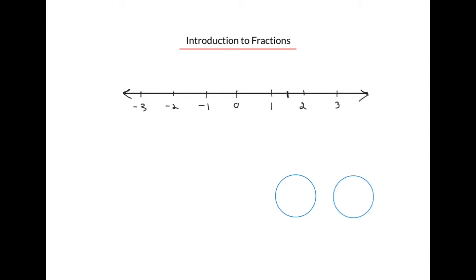We've divided the space between 1 and 2 into two equal parts, so we'll also do that for the space between 0 and 1, and extend that to the circles to divide them in half. So starting at 0, we've gone three steps over out of the two parts we've divided each whole number into. And if we indicate it by way of shading, we've shaded 1, 2, 3 parts out of the two parts that we've divided each whole into.